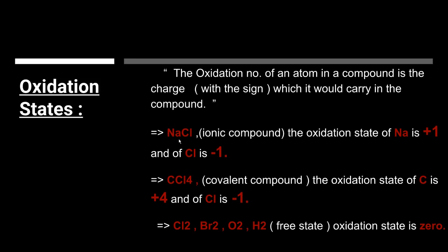For example, this is sodium chloride, the common table salt, which you all should be familiar with, and it's an ionic compound. In an ionic compound, the oxidation states are determined on the basis of the number of electrons gained or the number of electrons lost. In this case, the oxidation state of sodium is positive 1 and of chlorine is negative 1.